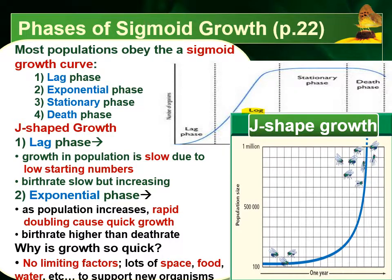Limiting factors are biotic and abiotic parts of the environment that slow down or inhibit the population from growing. This could include the amount of space, food, water, how much competition there is, whether there are predators in the area, and how many mates are available. There are many different types of limiting factors depending on the situation. If there are no limiting factors, reproduction can occur as fast as possible — that's why we get this doubling of the population during the exponential growth phase.